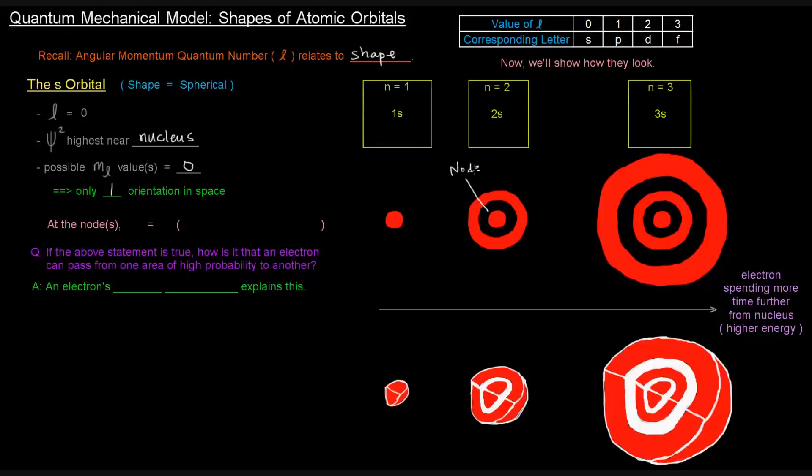This is a node. And in the second depiction that's shown here, it's colored in white. That area there is a node. And that's an area where the probability density actually equals zero. So the probability density at the node equals zero, which means that the electron cannot be located there at all.